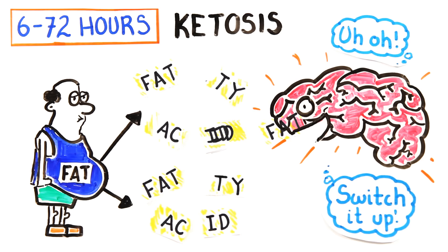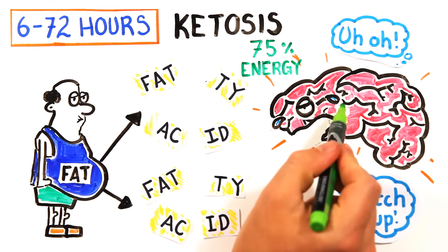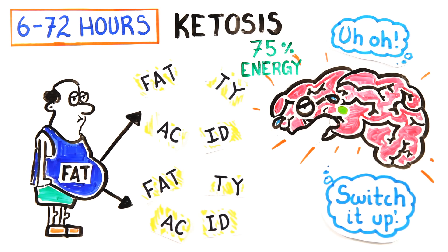This works for the time being, but ultimately only 75% of the brain's energy requirements can come from ketones. It still needs glucose, which means your cognitive functioning becomes impaired.